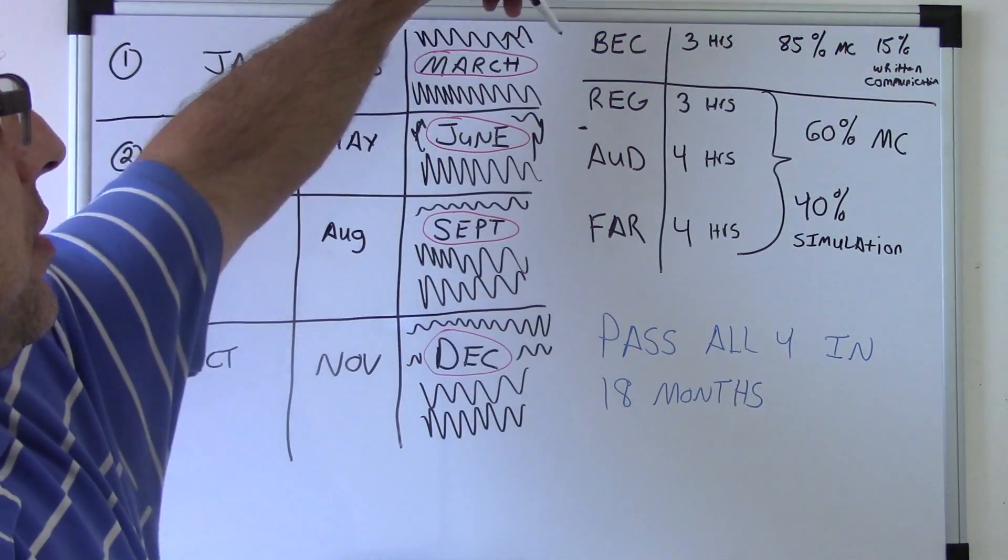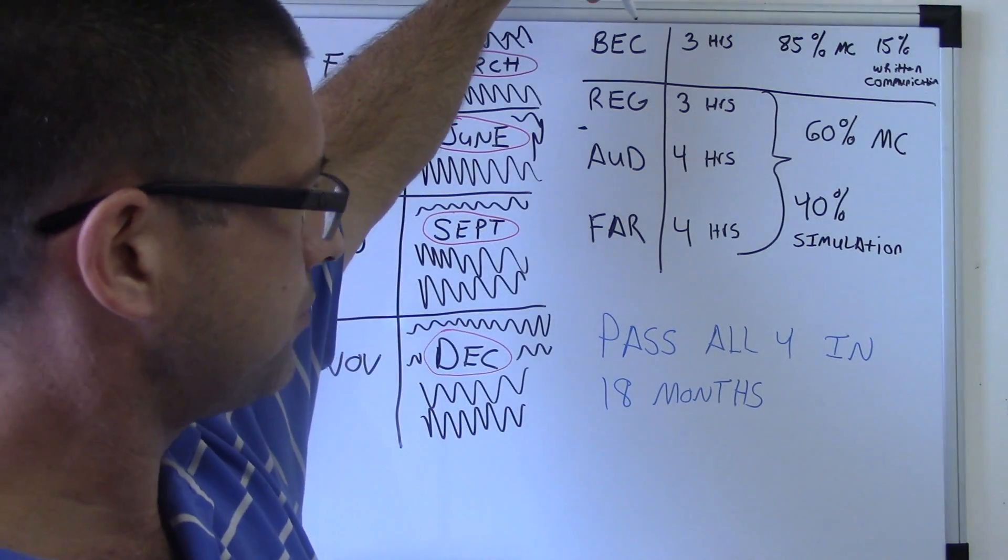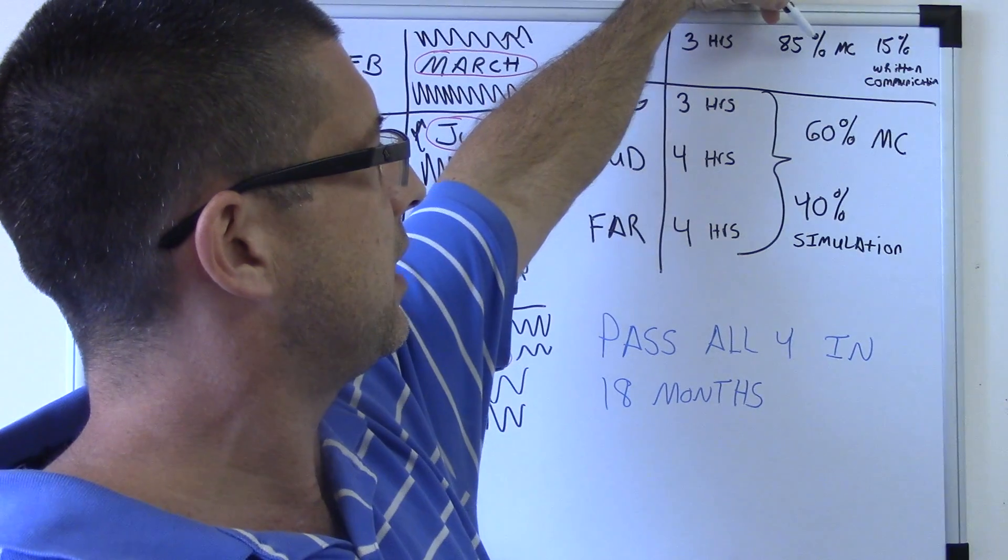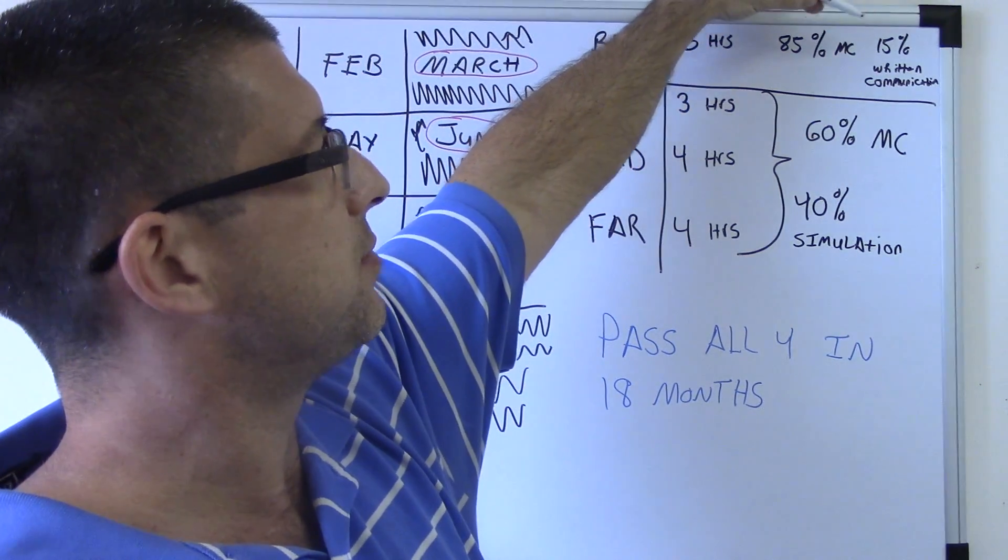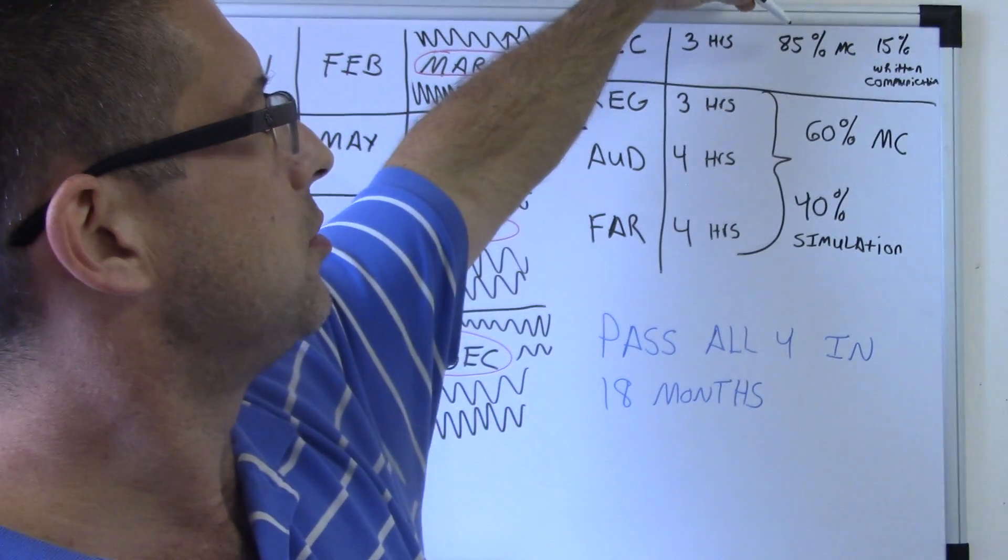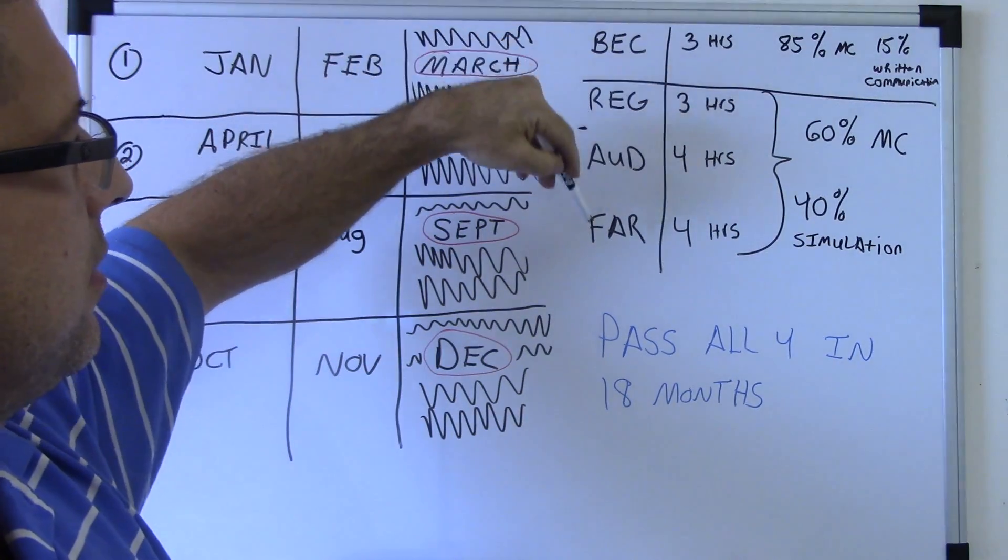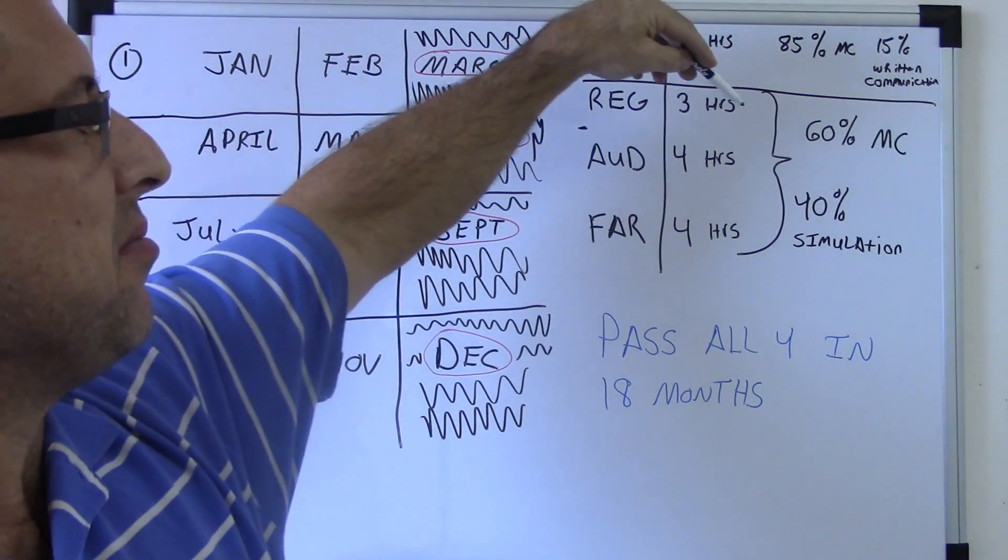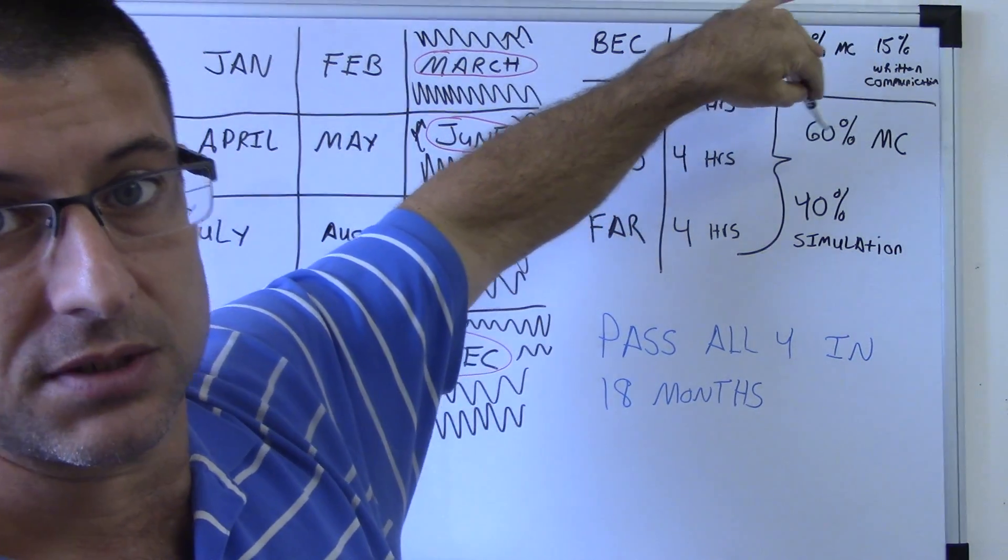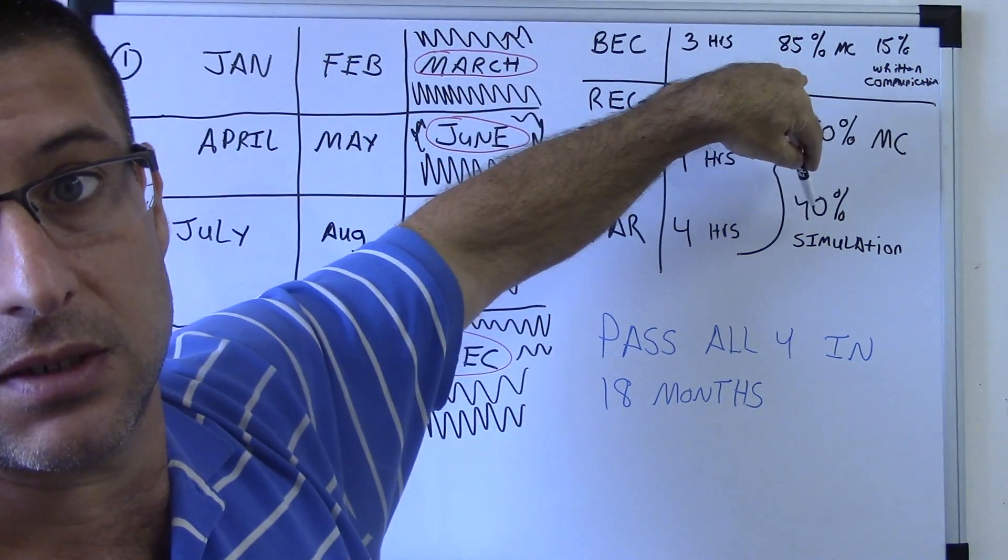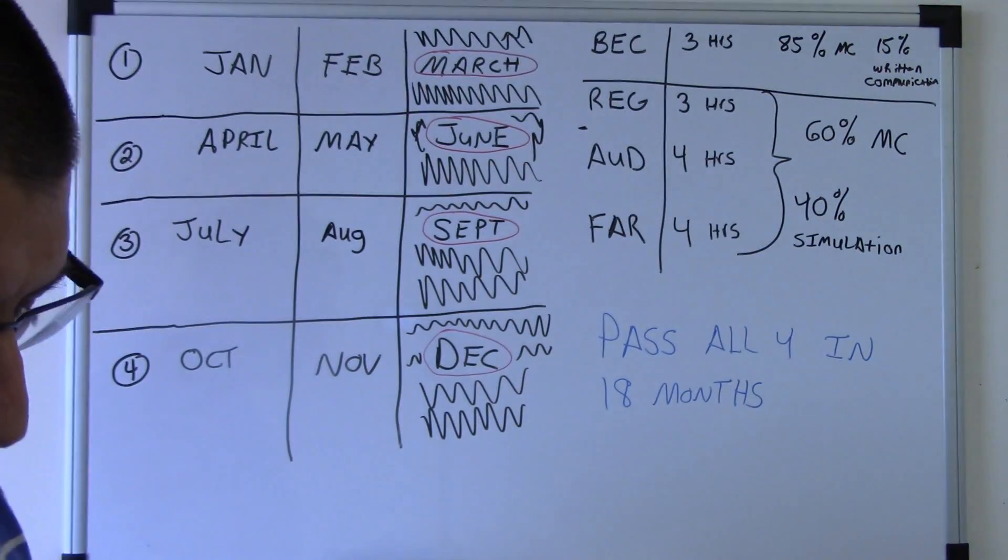And then why would I pick BEC over REG? Well, because BEC is the only one that has written communication on it. And that's worth 15% of your grade, while the multiple choice is 85%. The other three exams, REG, audit, and FAR, they all are worth 60% multiple choice and 40% of your grade is the simulations.